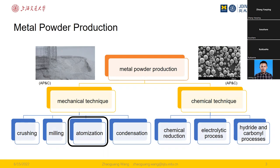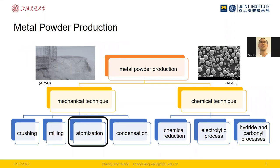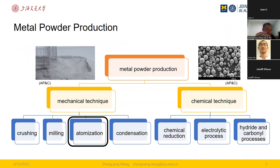Today our focus will be on atomization, because among all metal powder production techniques, atomization is the most popular one. It is very efficient in terms of energy consumption, can produce powders on a large mass scale, and the powder size can be controlled over a very wide range to satisfy different requirements.